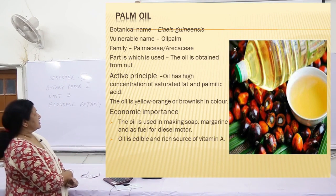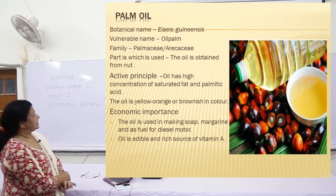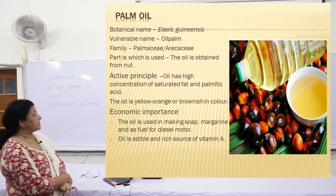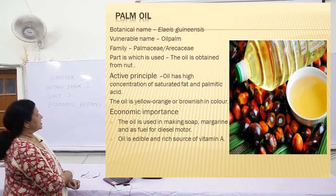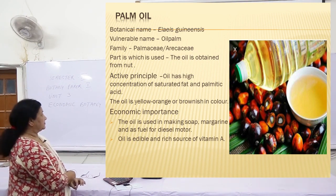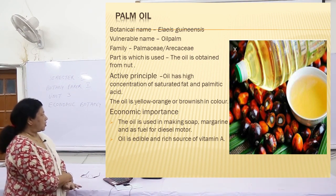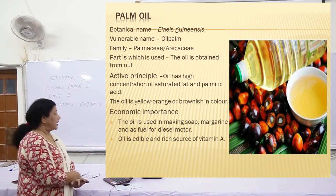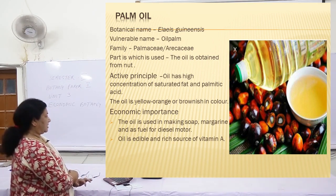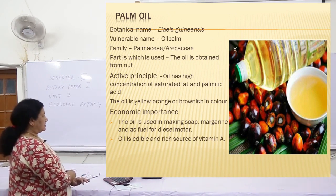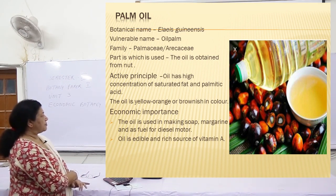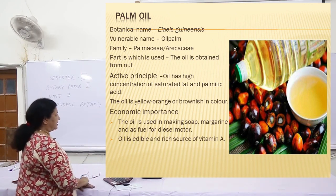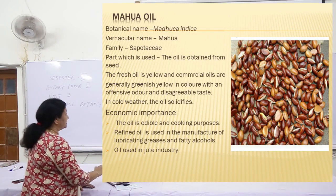Coming to palm oil. Botanical name: Elaeis guineensis. Vernacular name: oil palm. Family: Palmae. The oil is obtained from the nut. Active principle: the oil has a concentration of saturated fat and palmitic acid. The oil is yellow, orange or brownish in colour. Economic importance: the oil is used in making soap, margarine and as a fuel for diesel motors. Oil is edible and is a source of vitamin A.